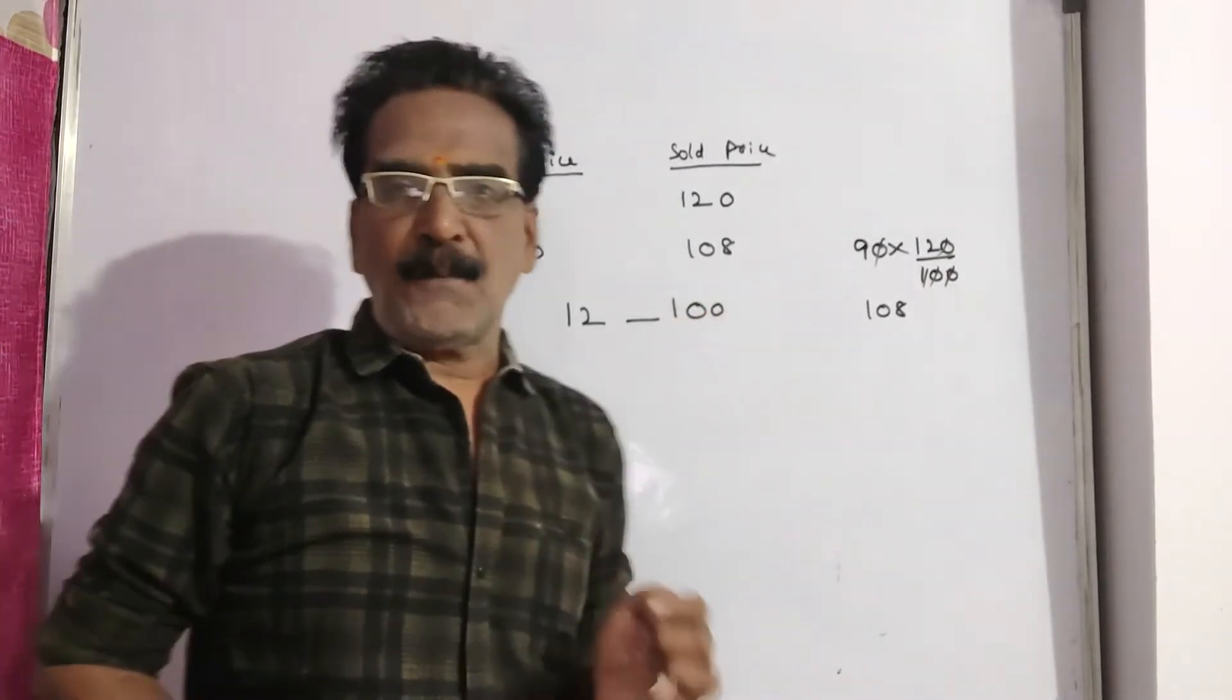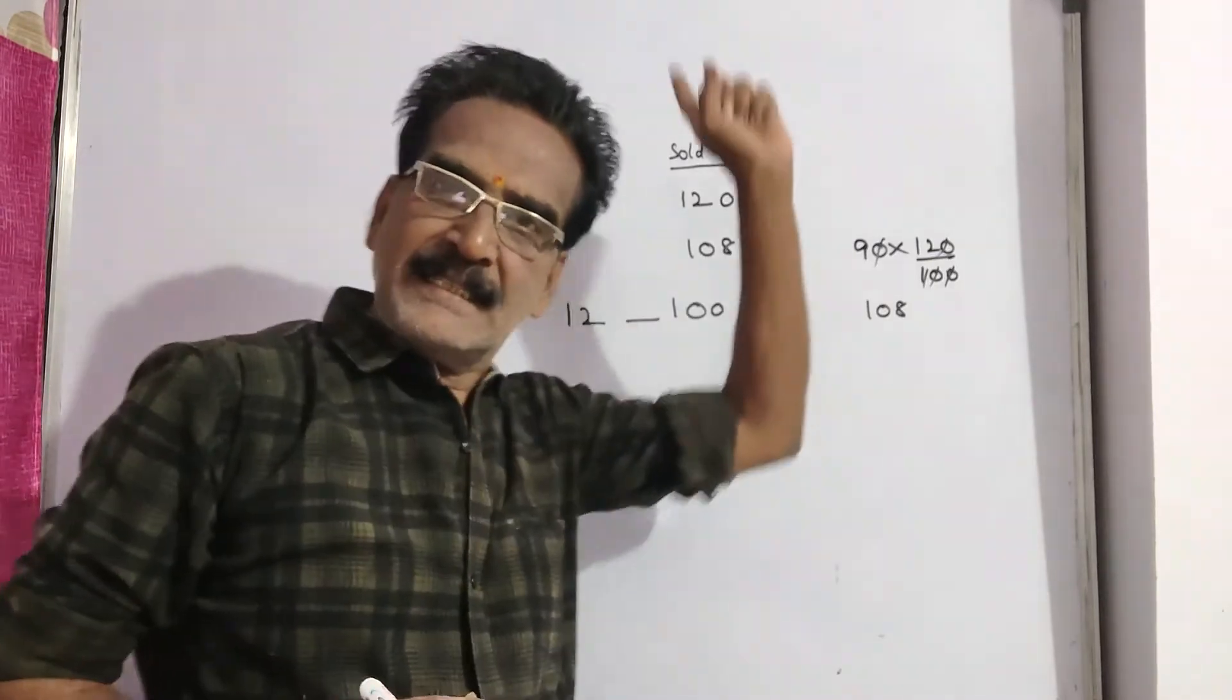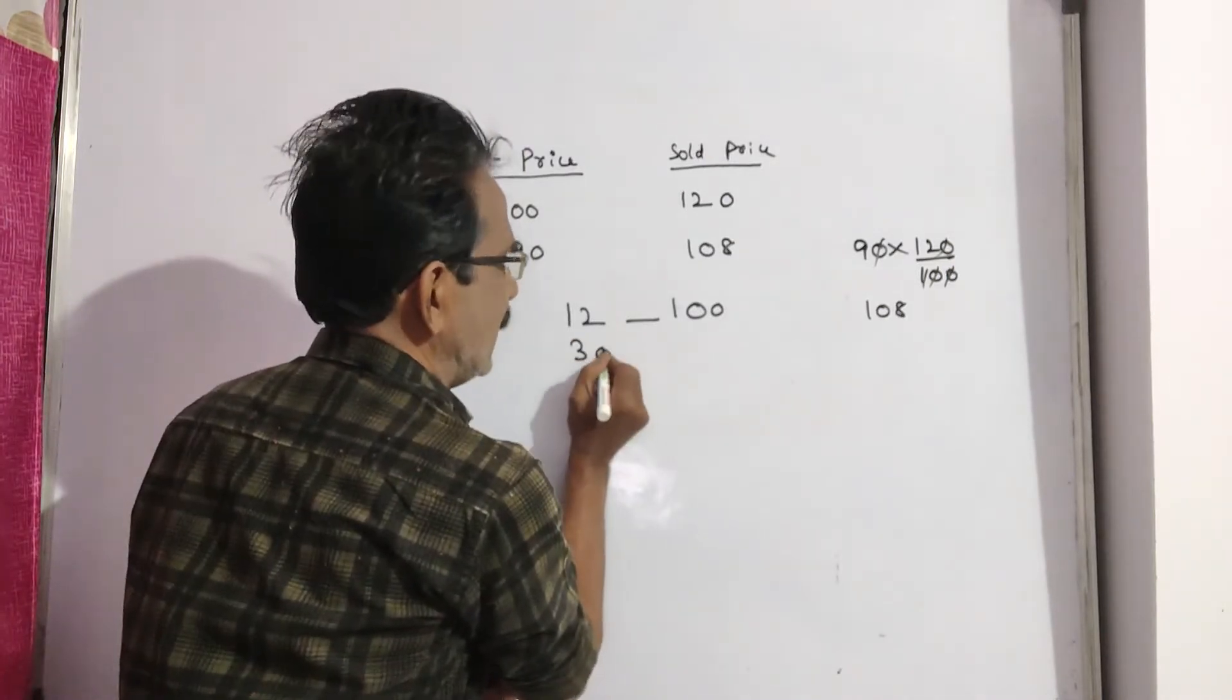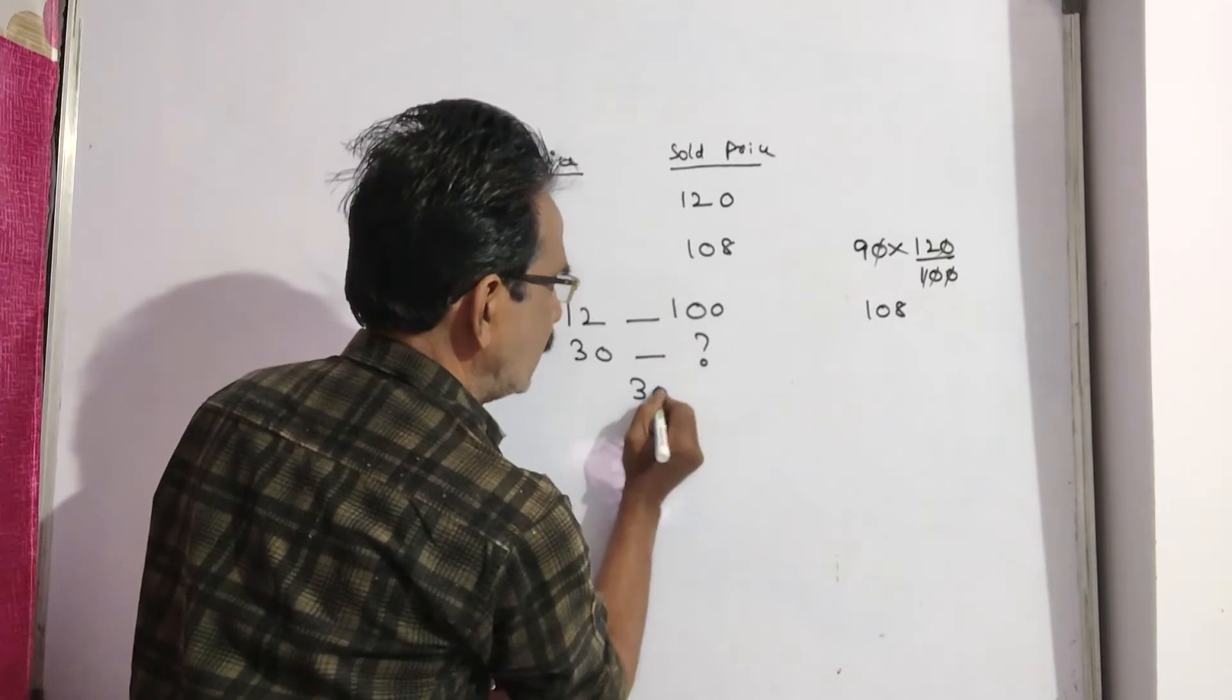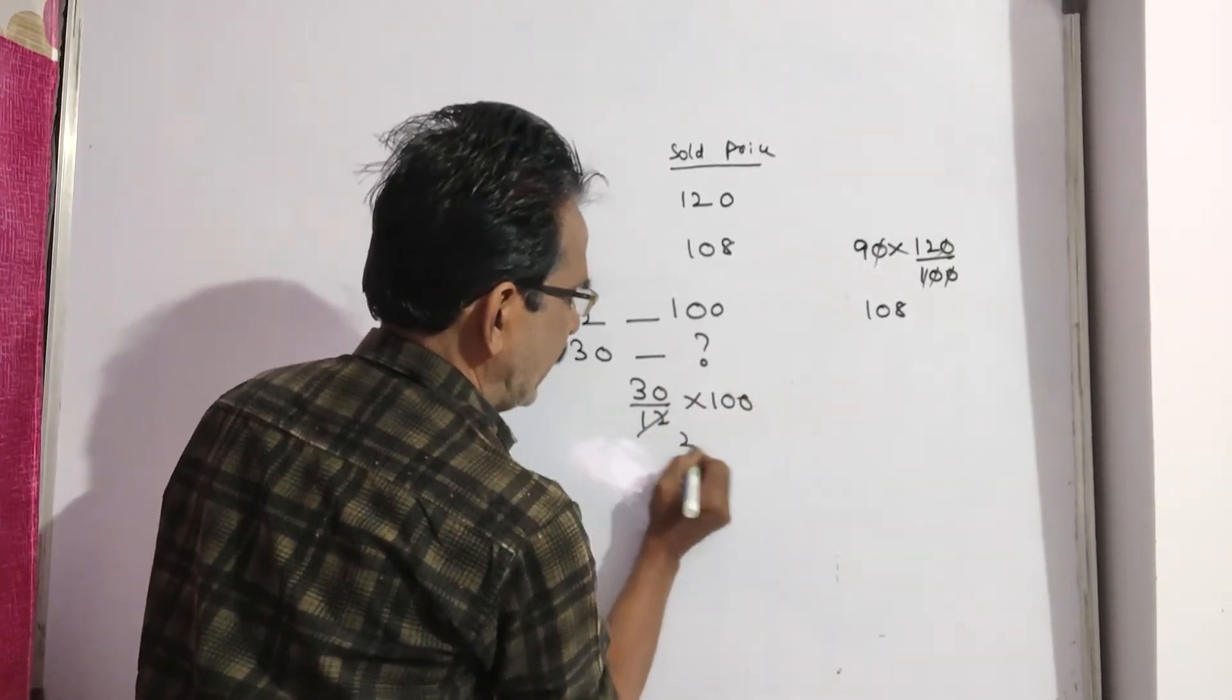But as per the problem, the new sold price is 30 rupees less than the earlier sold price. So, if 30 rupees less than the earlier sold price, the cost price must be 30 by 12 into 100, on cancellation.